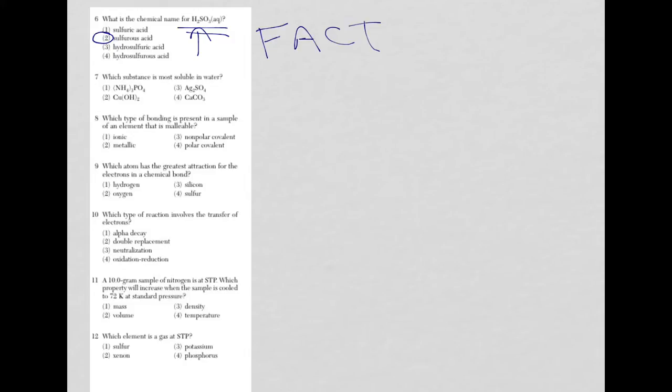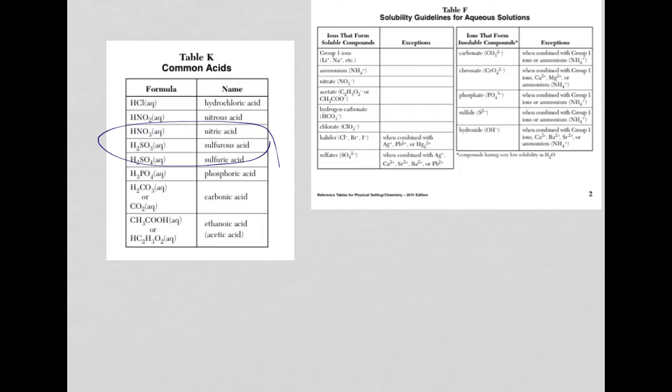Let's move on to question 7. Which substance is most soluble in water? We got 4 choices here. There is a solubility reference table, and you have to know how to use it, so I'm going to call this a skill. I'm not a big fan of the way that this is laid out, but we have to deal with it. We have a column for soluble compounds. Exceptions means insoluble, not going to dissolve in water. Then we have more insoluble, and then exceptions meaning soluble. Your solubles are on the outside and your insolubles are on the inside.